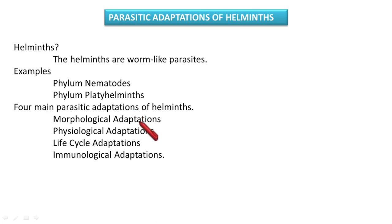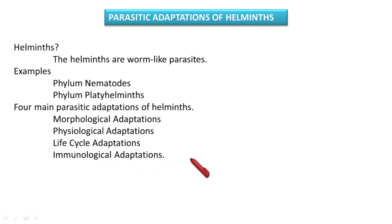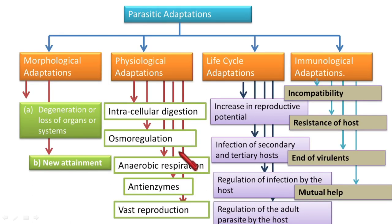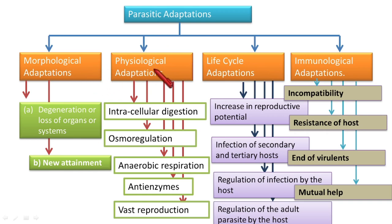Today we are going to see the parasitic adaptations of helminths. All adaptations are explained under four headings: morphological adaptations, physiological adaptations, life cycle adaptations, and immunological adaptations. Let's have a look through all the adaptations for the parasitic mode of life.